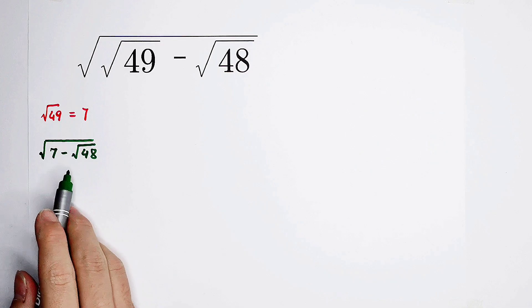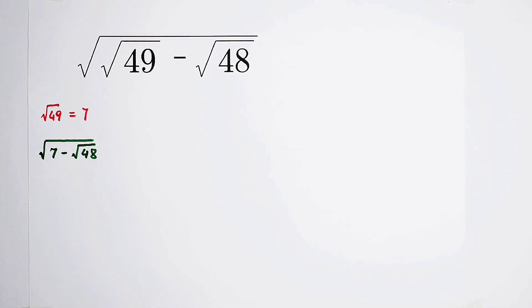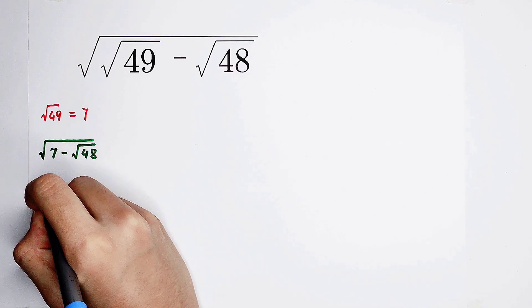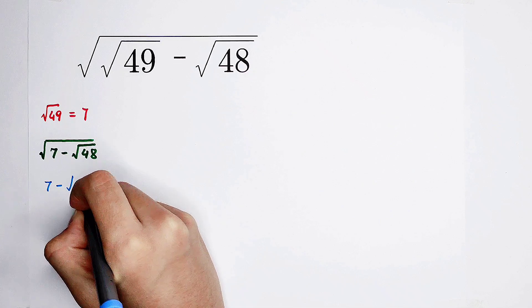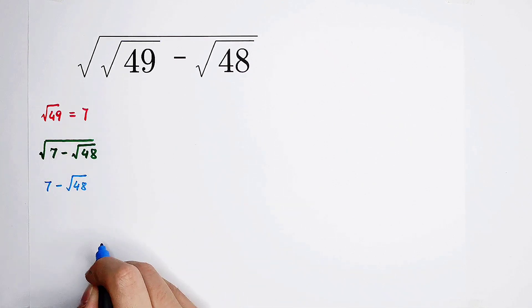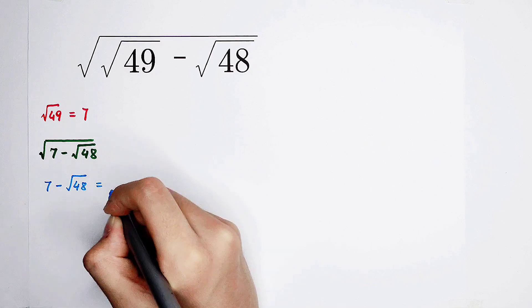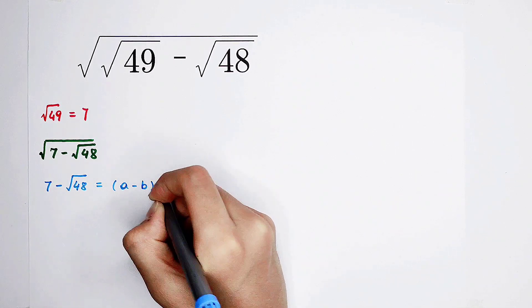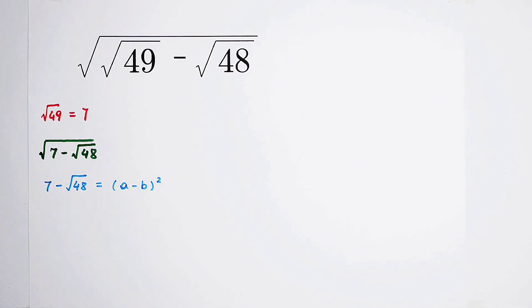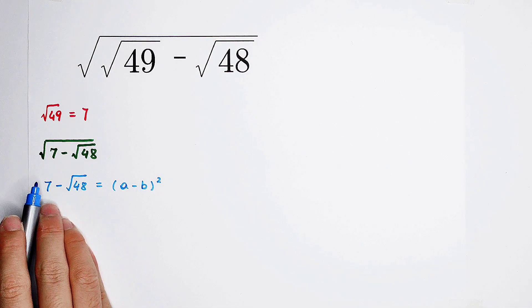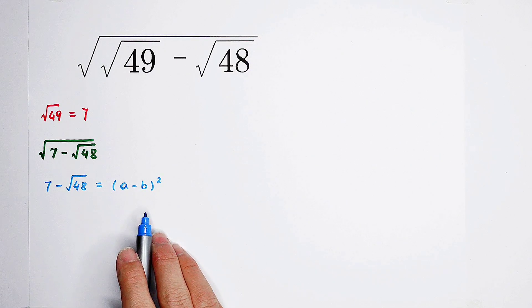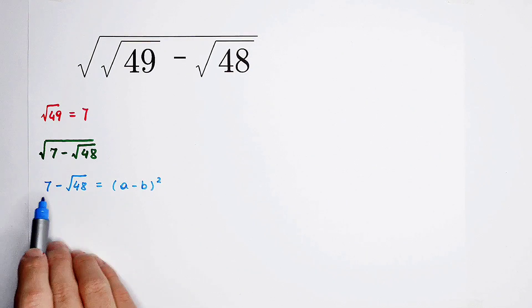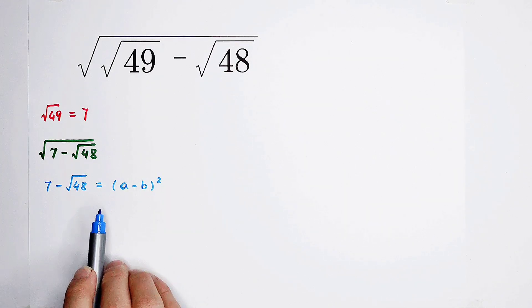We should simplify this guy. How shall we simplify this? We always hope that under the square root, 7 minus square root of 48, can be written as (a minus b) all square. Because here is minus, so here should also be minus. So it's going to be (a minus b) all square.